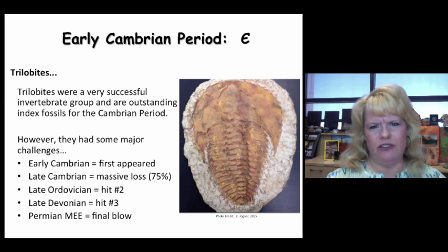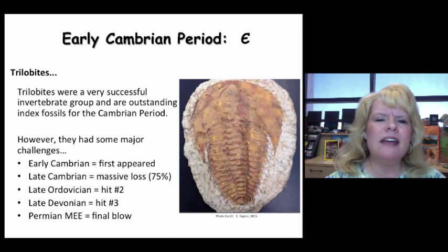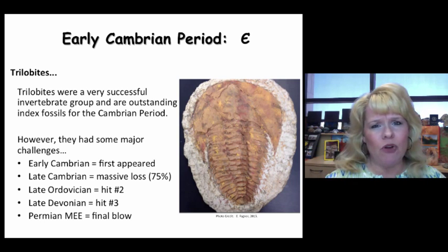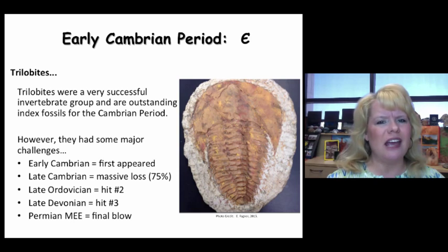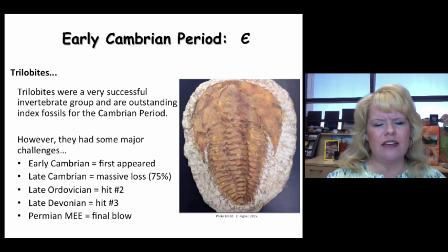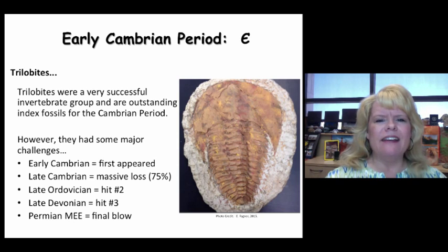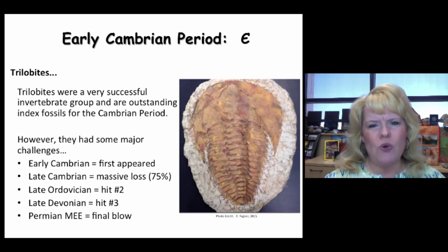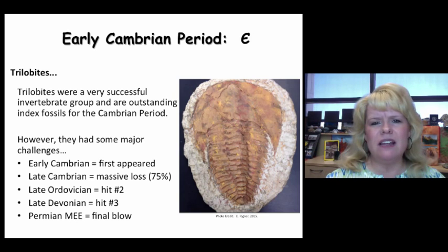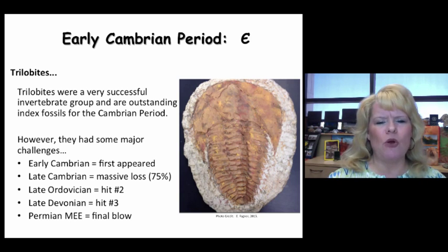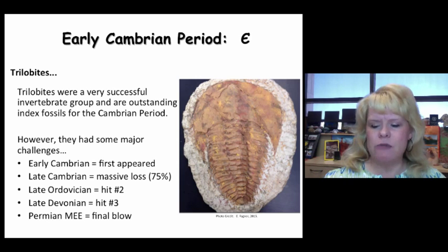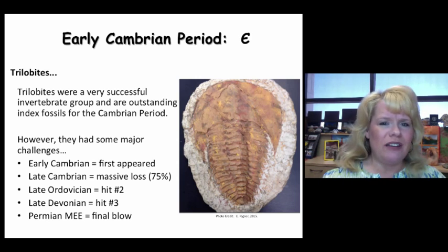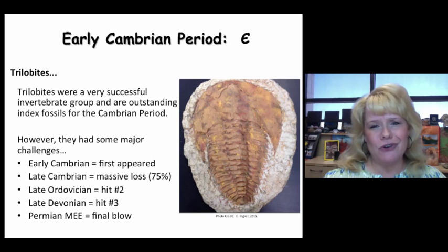Trilobites were a very successful group of invertebrates that made a strong appearance at the beginning of the Cambrian but took a serious hit at the end of the Cambrian — a 75% loss to be exact. They would take another hit at the end of the Ordovician, a third blow at the end of the Devonian, and were finally wiped out at the end of the Permian. Pretty enduring little animals, though — they had a great ecological niche that they filled.